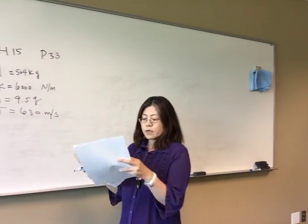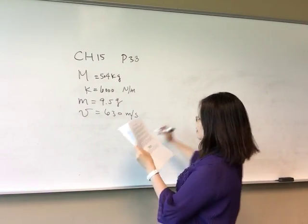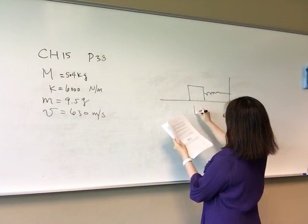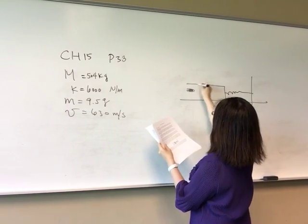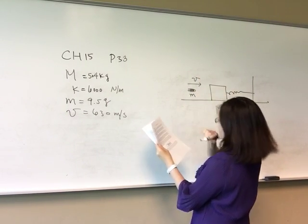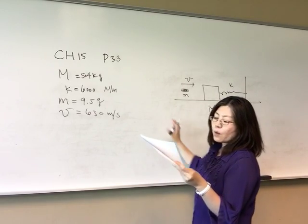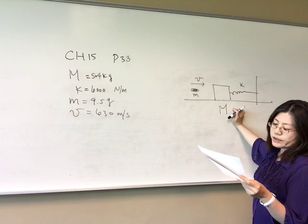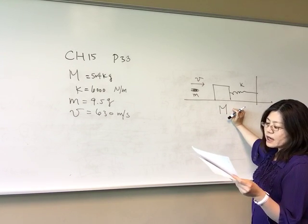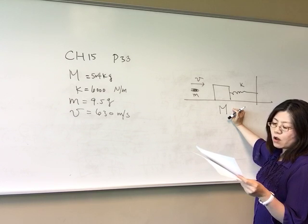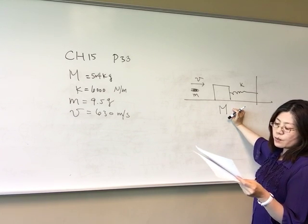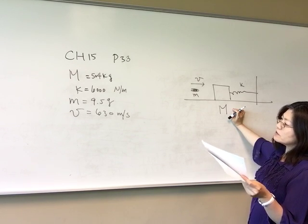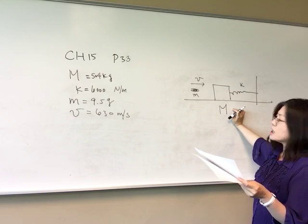Problem 33: A block of mass 5.4 kilograms at rest on a horizontal frictionless table is attached to a rigid support by a spring with constant 6000 newtons per meter. A bullet of mass 9.5 grams and velocity 630 meters per second strikes and is embedded in the block.